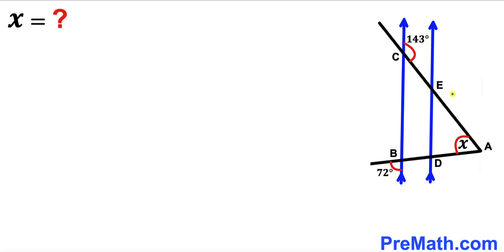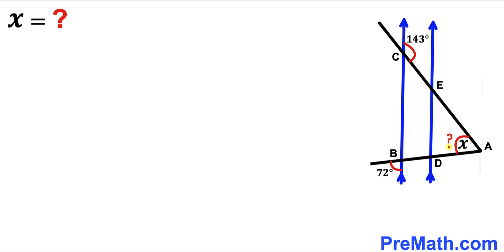Welcome to pre-math. In this video we have got two lines AC and AB that meet each other at point A, and as a result we get angle X as shown in the diagram. Moreover, we have two parallel lines BC and DE, and as a result we get this angle of 143 degrees and likewise this angle of 72 degrees. Our task is to find the value of angle X.